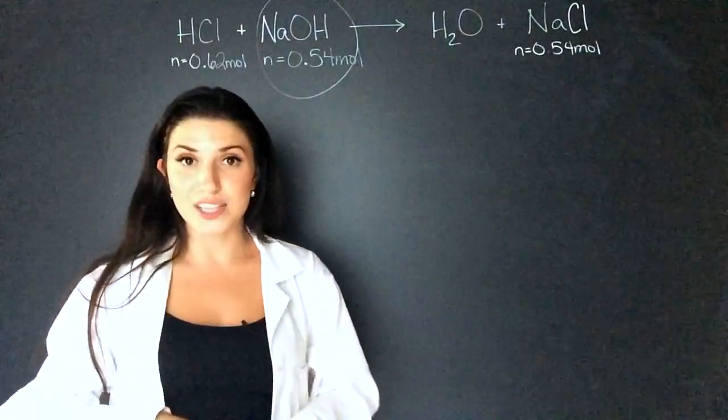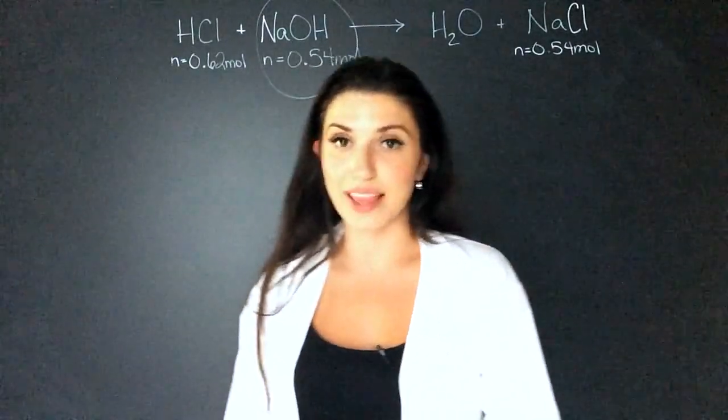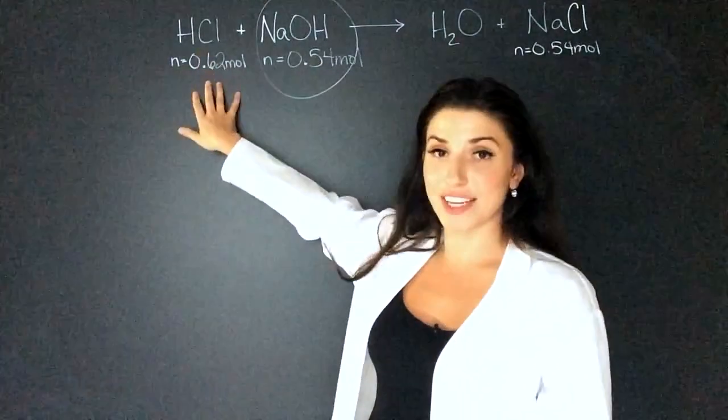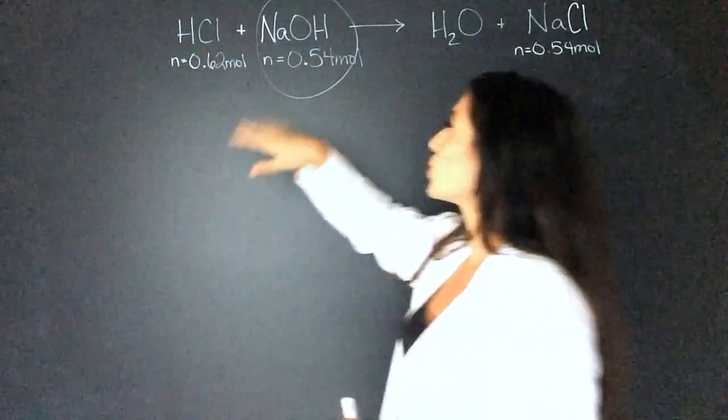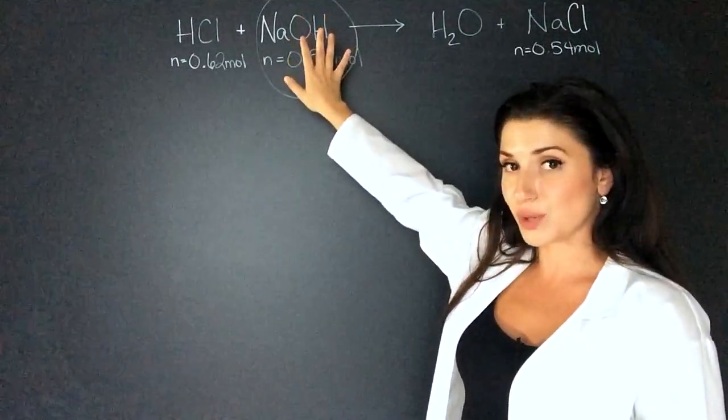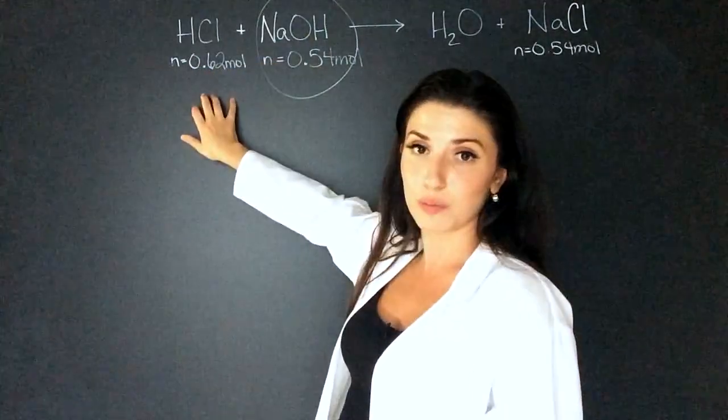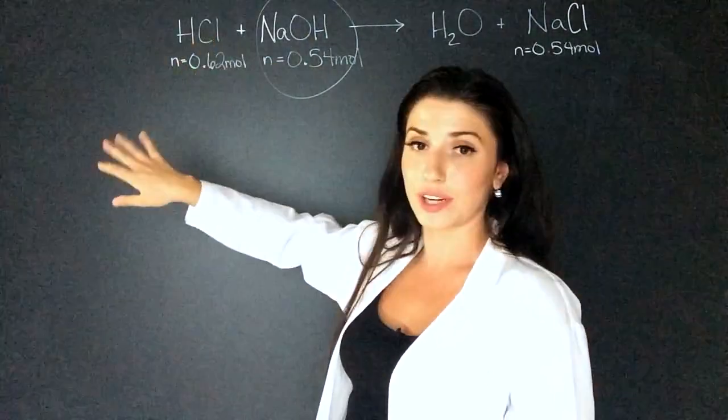Now the third question asked us how many moles of the excess reagent will be left. So our excess reagent is the hydrochloric acid. So we know that 0.54 moles are going to be used of the sodium hydroxide. So that also means that 0.54 moles are going to be used of hydrochloric acid.